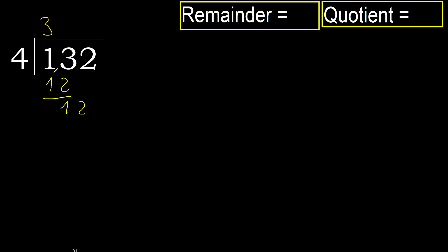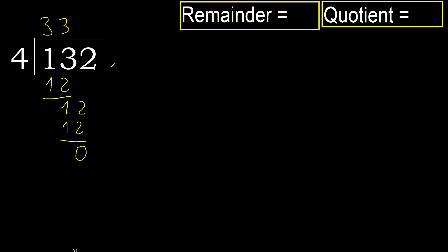Next, bring down: 12. 4 multiplied by 3 is 12, which is not greater, ok. 12 minus 12 equals 0. Next — that is not a number, therefore finish.